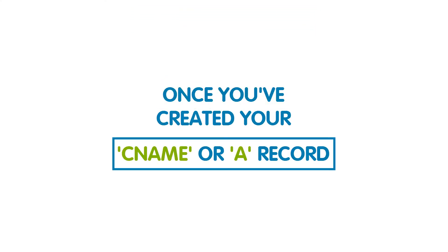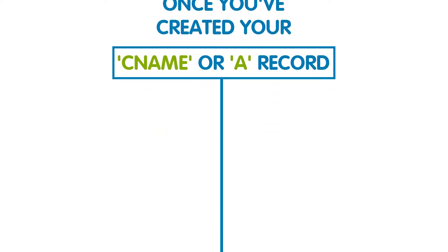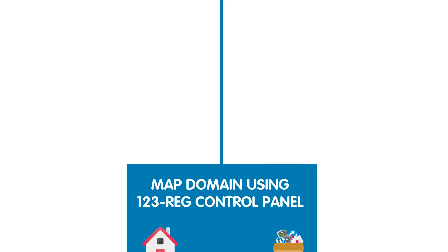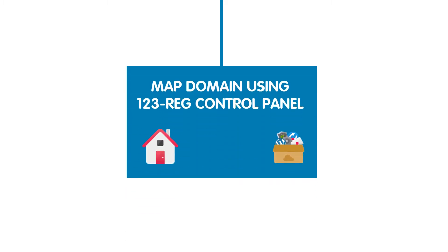So you've created your CNAME or A record — we're nearly done, there's just one more thing we need to do. You will now need to map the third-party domain name to your 123REG hosting package.